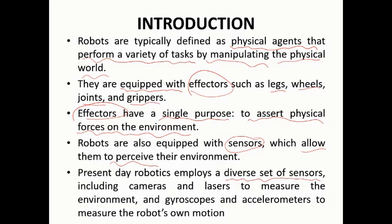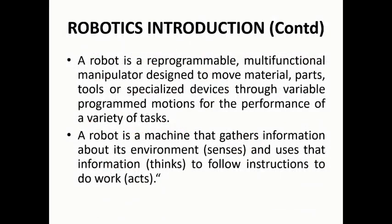We have a pool of sensors — many types used inside robots — such as cameras, laser beam sensors to measure the environment, and gyroscopes, which are very useful most of the time. In addition, accelerometers are used for measurements of the robot's motion.